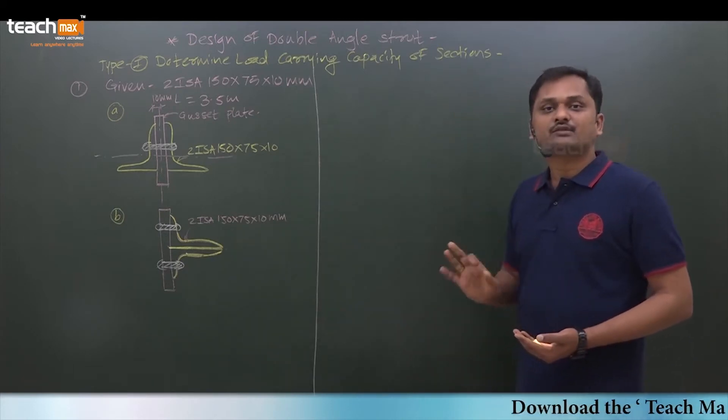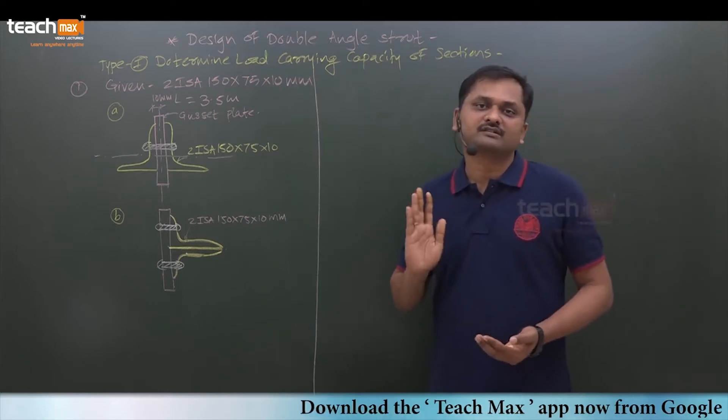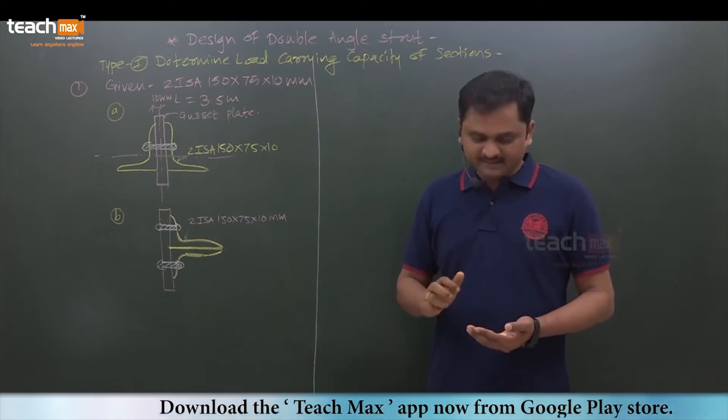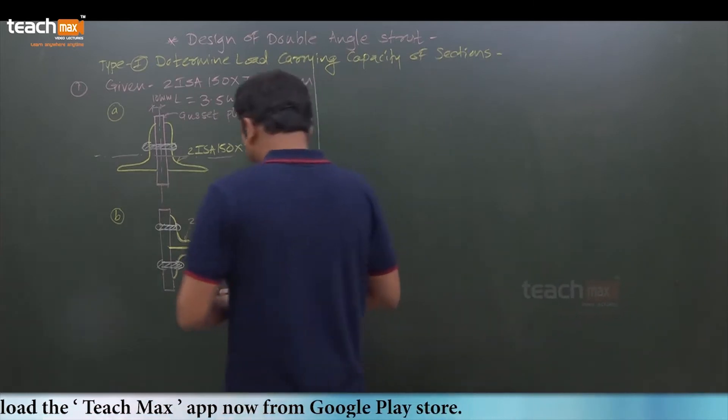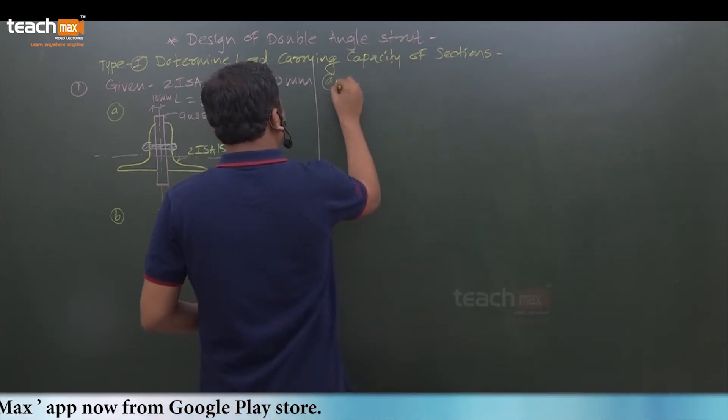Where we are going to determine design compressive strength, what is the first step? First of all, find out the properties of the section. So properties of the section.